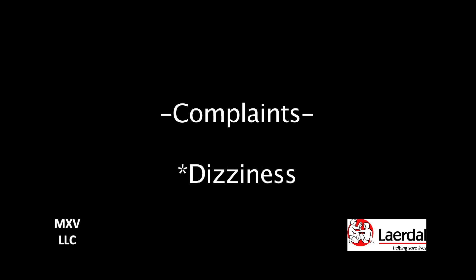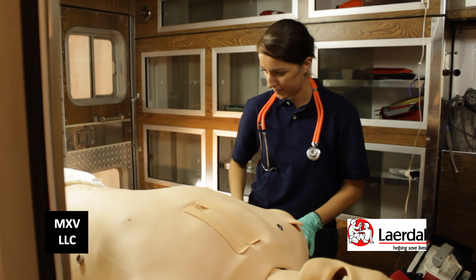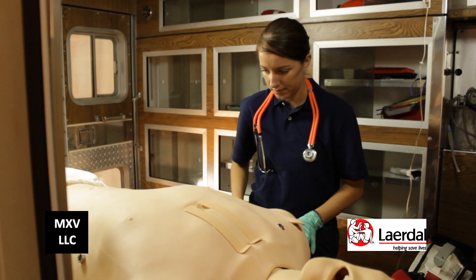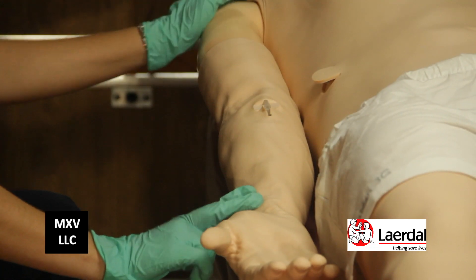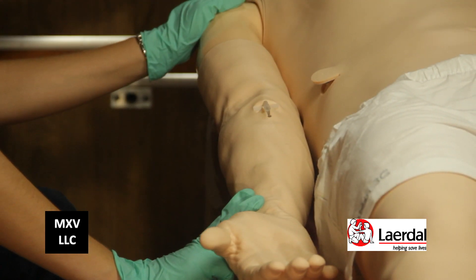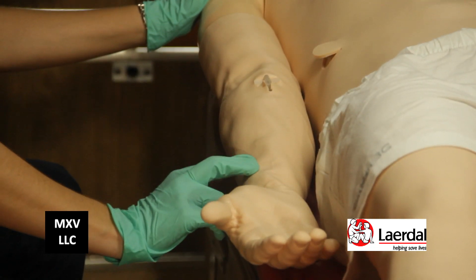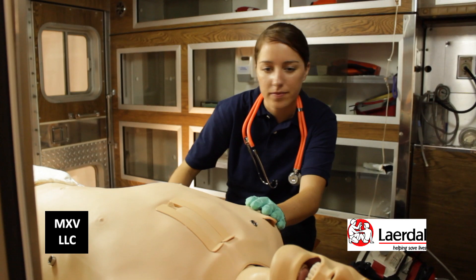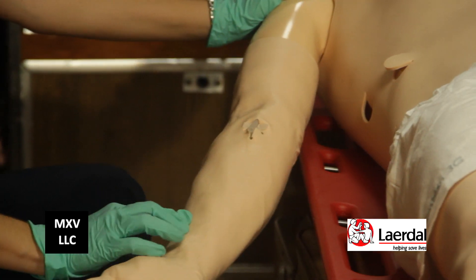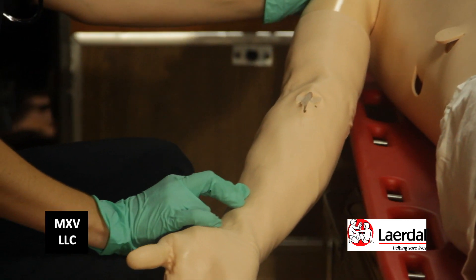the paramedic does a quick scan to ensure there is no danger. She introduces herself to the patient in order to assess AVPU and ABCs, while placing a hand on her shoulder to comfort her and the other hand on her wrist to complete a rapid radial pulse check. The paramedic also notices the patient's skin is pale and diaphoretic.